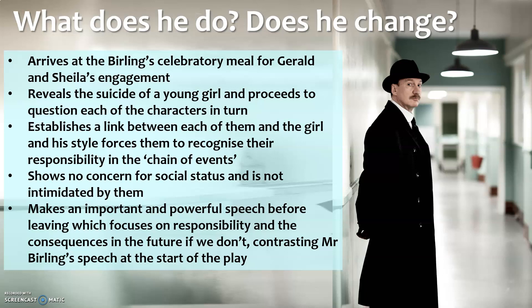A really key bullet point: he makes an important and powerful speech before leaving which focuses on responsibility and the consequences of what happens if we don't take responsibility. Whenever you talk about the inspector, make sure you directly contrast him with Mr Birling. At the beginning of the play you have Birling's speech full of dramatic irony with incorrect predictions, and then just before the inspector leaves, he makes his own speech which juxtaposes that, because the inspector's speech includes correct predictions about the future.